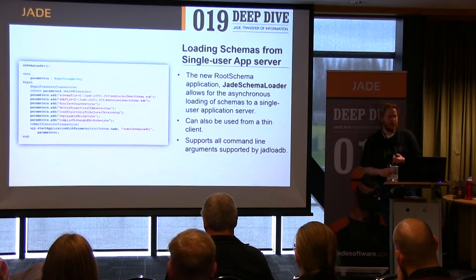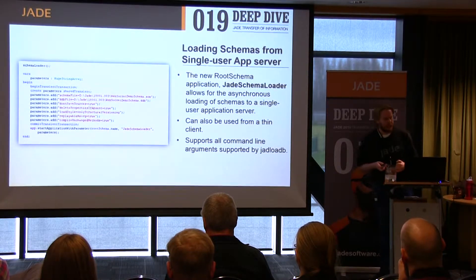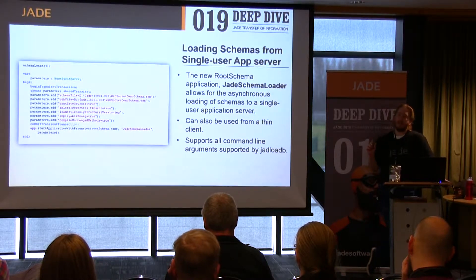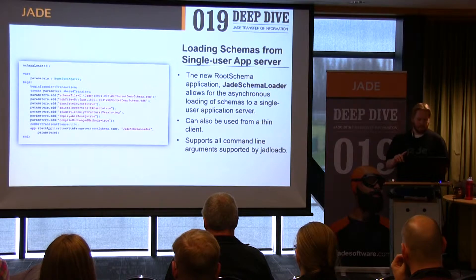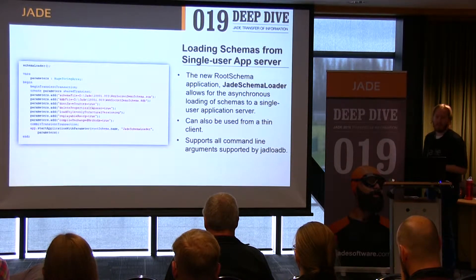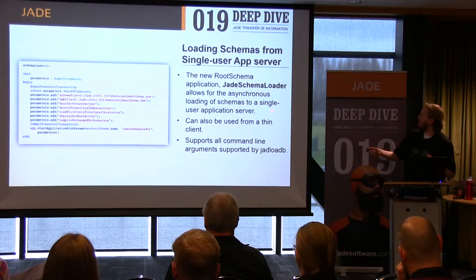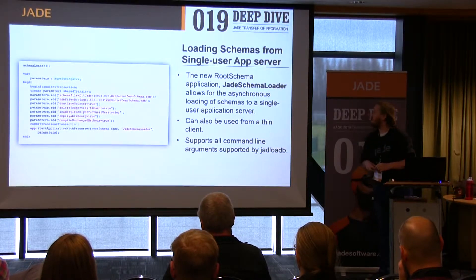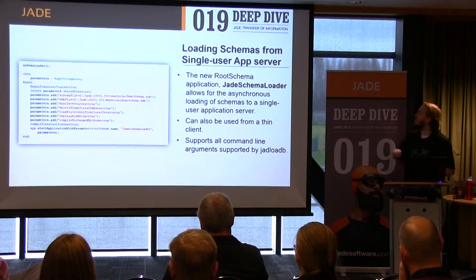Two things: first, you can run non-GUI applications from a thin client connected to a single user app server. Second, there's a new root schema app for loading schemas. This app does exactly the same thing as JAD load B, but it's a root schema application and supports all of the command line arguments supported by JAD load B. The reason you might use a single user application server rather than a RAP and an app server is the significant performance boost from combining them.